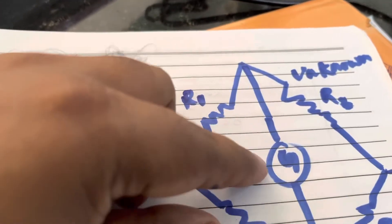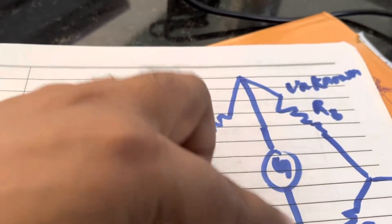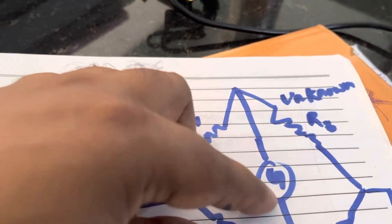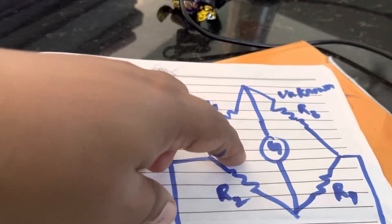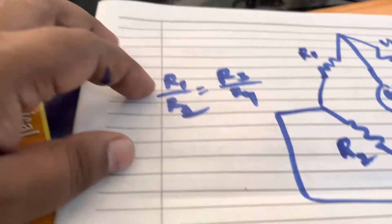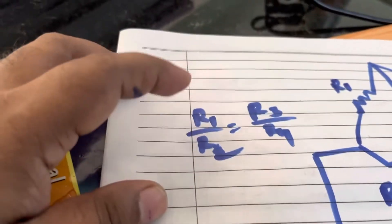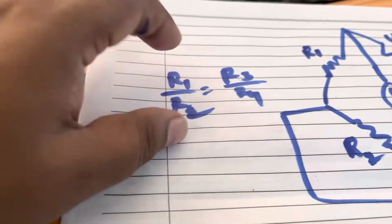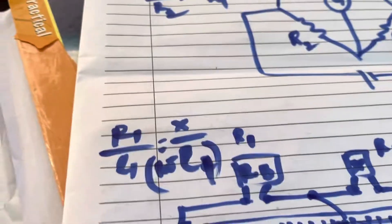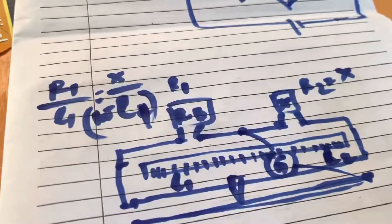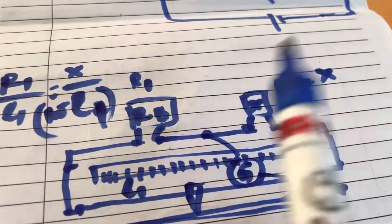When no current flows through the galvanometer — that is, Ig equals zero — we have the balance condition. Using Kirchhoff's rules, we find the relationship: R1 by R2 equals R3 by R4, or left by left equals right by right, which gives us the unknown resistance. This is the Wheatstone bridge principle.